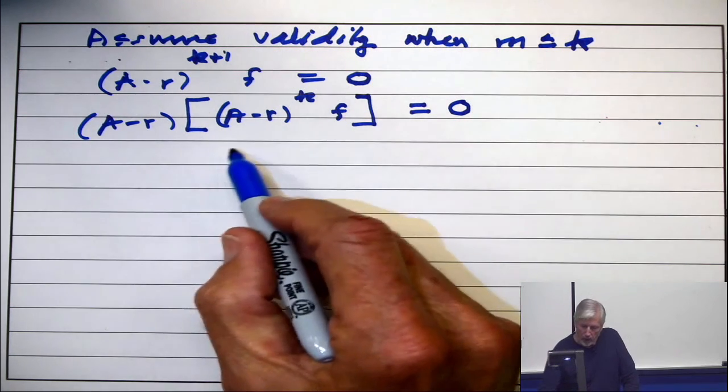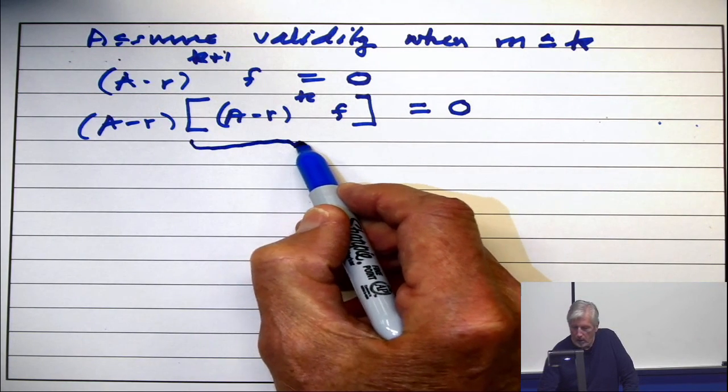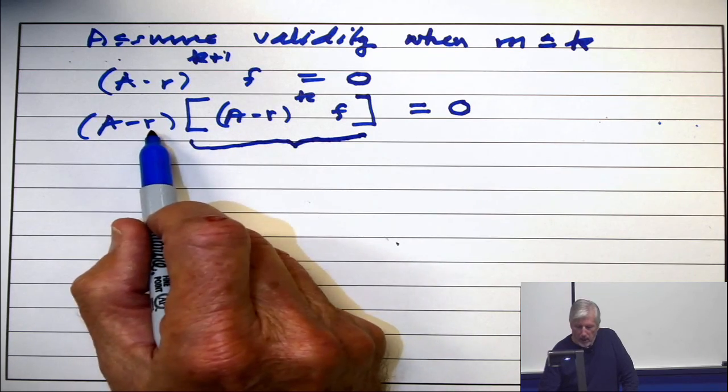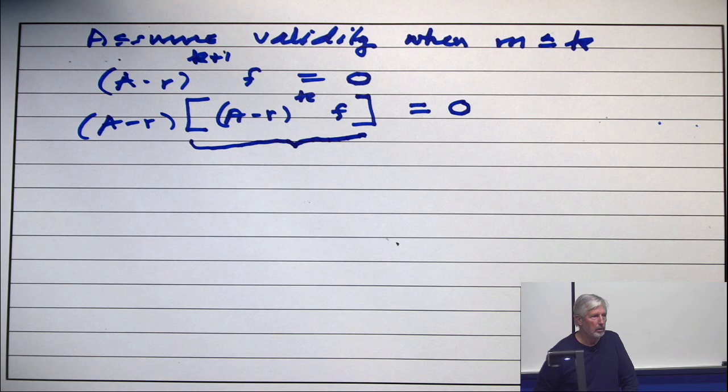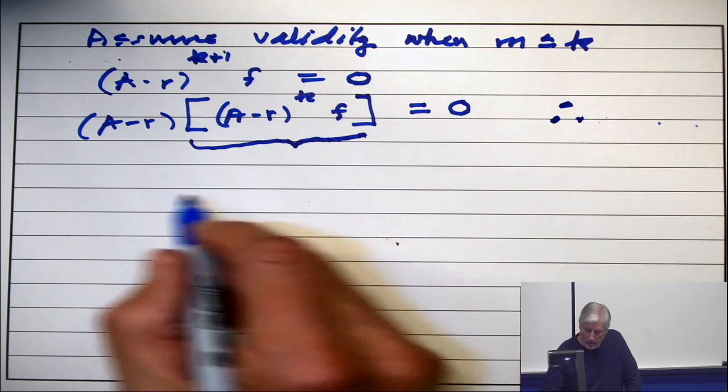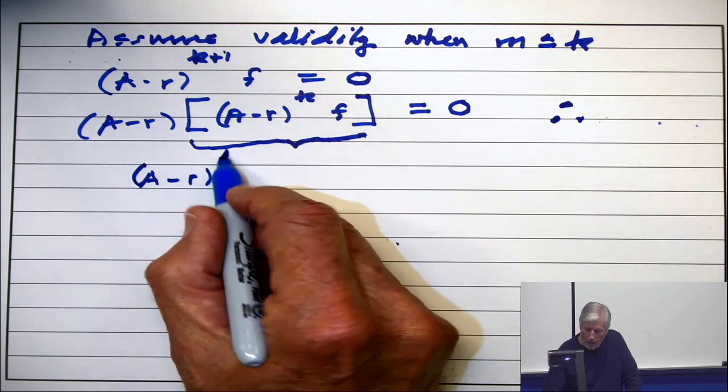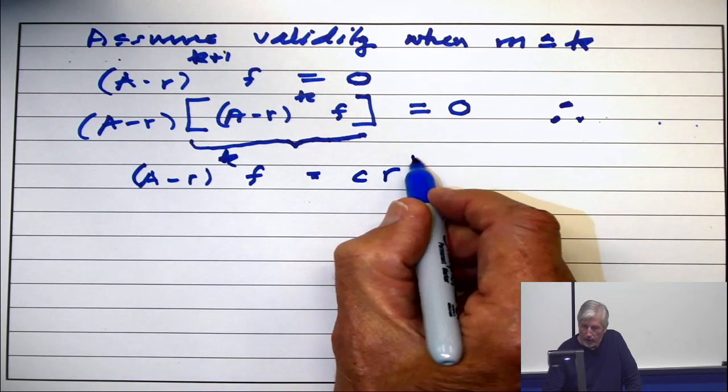Alright, now, use the base case of the induction. That is, a solution to (a-r) on something is 0. This implies, therefore, this something (a-r) to the k on f has the form constant times r to the n.